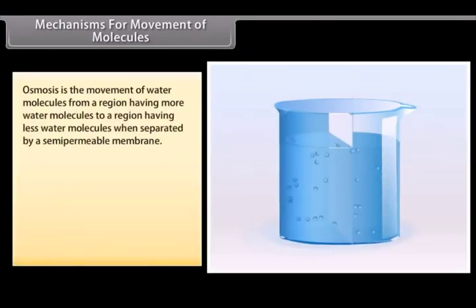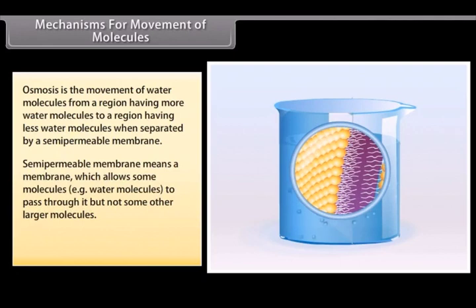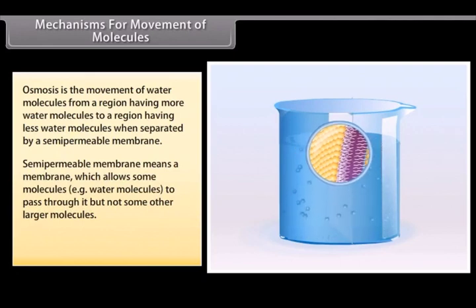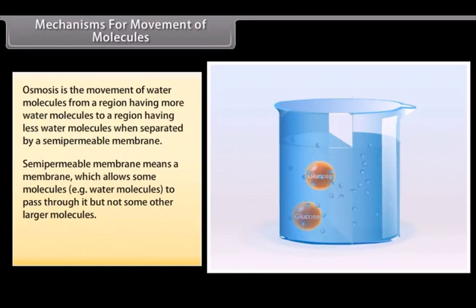Osmosis is the movement of water molecules from a region having more water molecules to a region having less water molecules when separated by a semi-permeable membrane. Semi-permeable membrane means a membrane which allows some molecules, that is water molecules, to pass through it but not some other larger molecules.